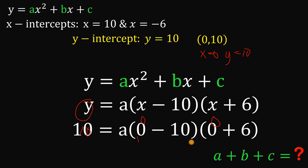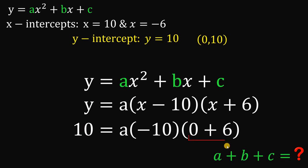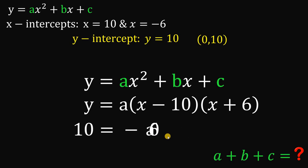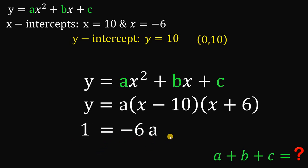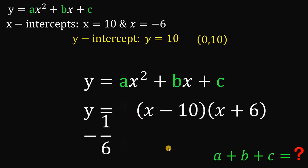Let's simplify: 0 minus 10 is negative 10, and 0 plus 6 is positive 6. So a times negative 10 times positive 6 gives us negative 60a. Dividing both sides by 10 gives 1 equals negative 6a. Dividing both sides by negative 6, we find that a equals negative 1 over 6.